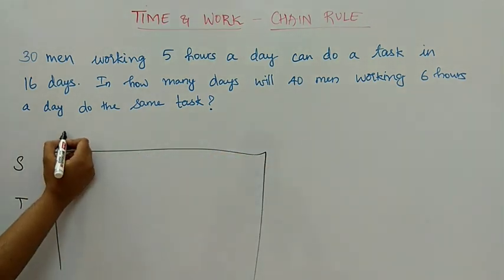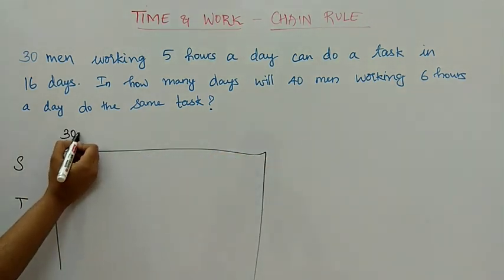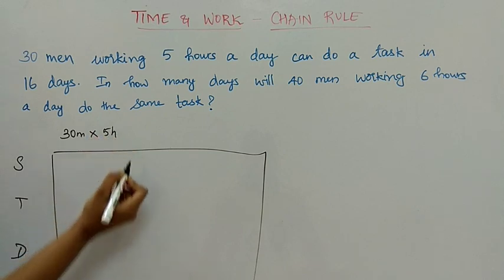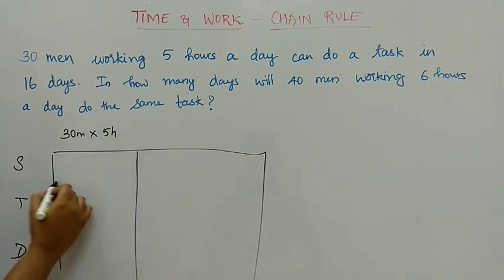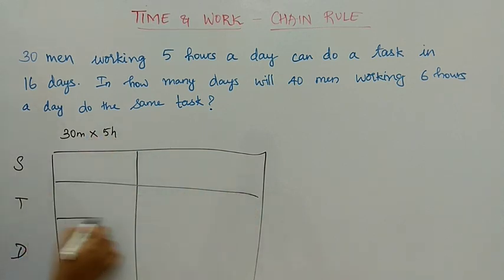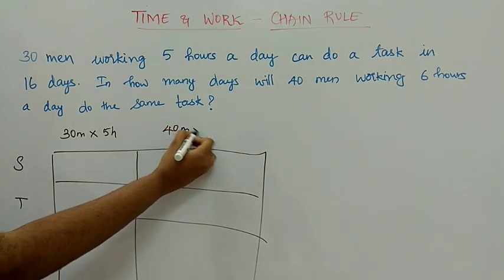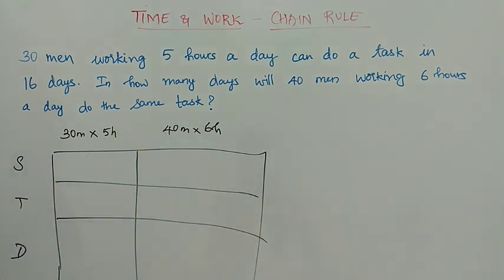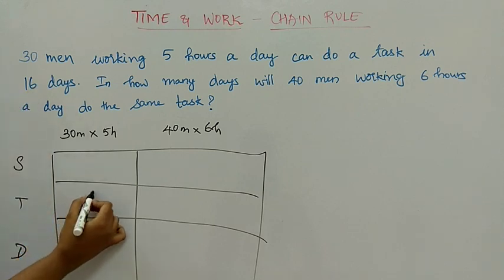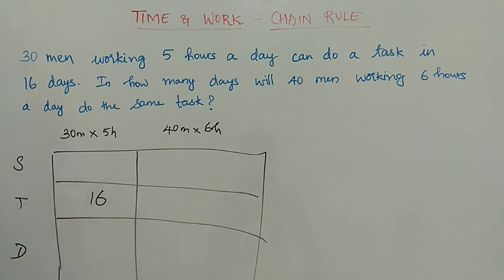The first one is 30 men in 5 hours. Now, 30 men into 5 hours — and this is how we get 40 men into 6 hours. If you get 30 men into 5 hours, you will get 15 days. If you get 40 men into 6 hours, you will get 40 hours.